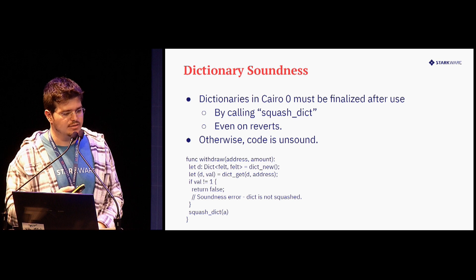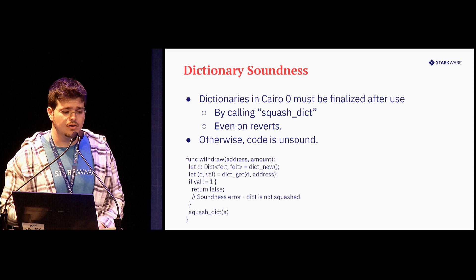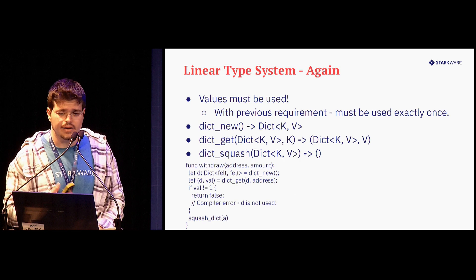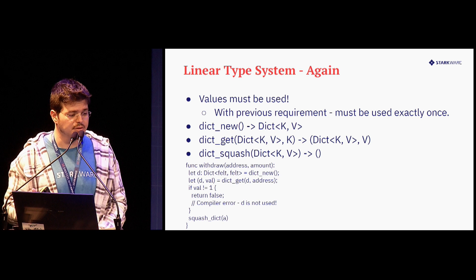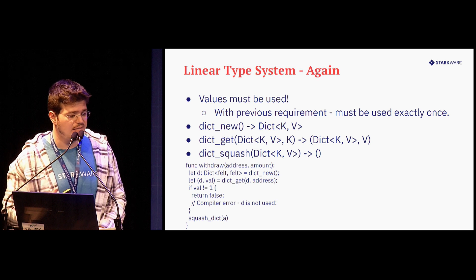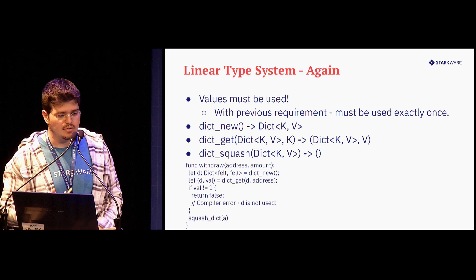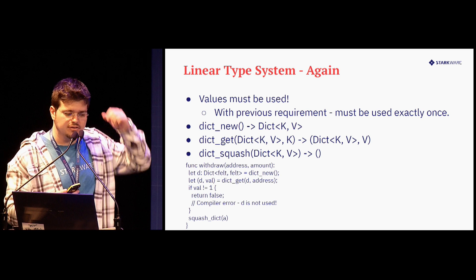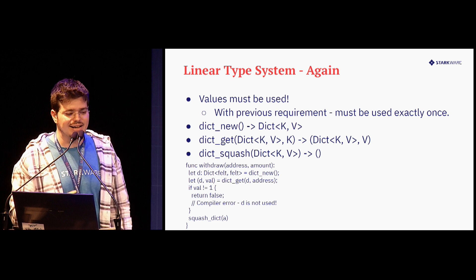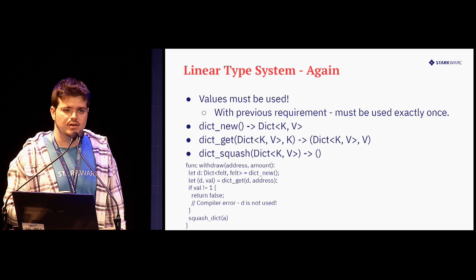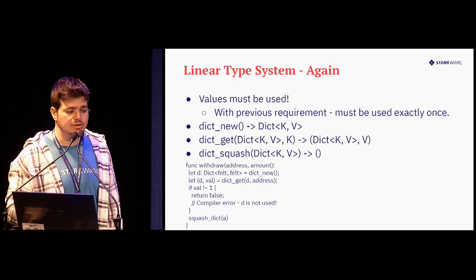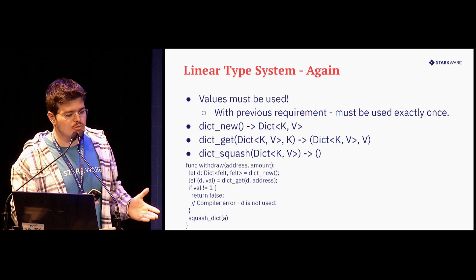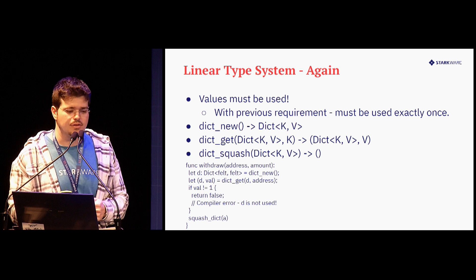So we don't want to allow users to do these bad things — we don't want Sierra code to allow this unsafe pattern. Instead, we force them to finalize the dict. The linear type system comes to the rescue here: another requirement of linear types is that values must be used exactly once. So if they are not used at all, that's also an issue. We introduce the dict_squash function that takes a dict — and this is actually the only way to get rid of dictionary instances.